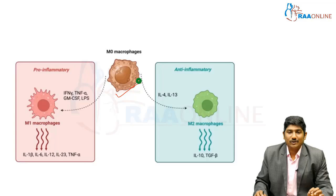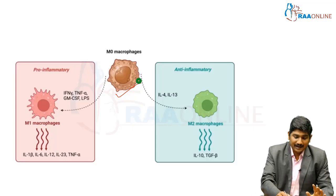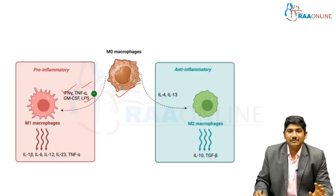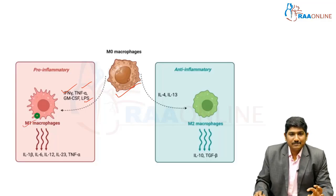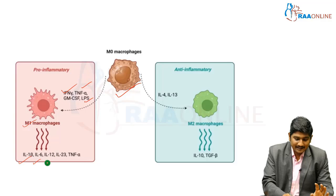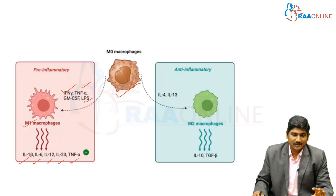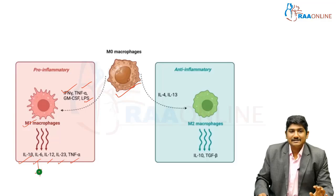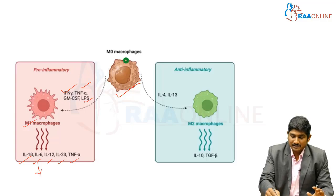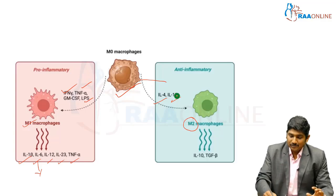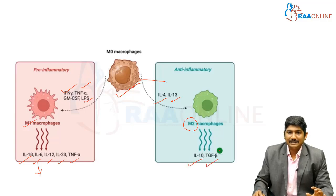With adequate stimuli such as interferon-gamma, TNF-alpha, GM-CSF, or LPS from gram-negative organisms, M0 macrophages are switched to M1 macrophages. Once M1 macrophages are produced, they release cytokines like IL-1β, IL-6, IL-12, IL-23, and TNF-alpha. We have a specific drug to control IL-6, which we will see in the following slides. Conversely, stimuli like IL-4 and IL-13 can convert M0 macrophages into M2 macrophages, which produce anti-inflammatory mediators like IL-10 and TNF-beta.